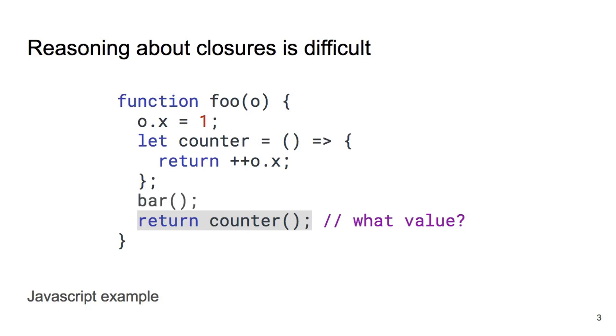But what if we add this innocent looking call to bar to our function? This simple addition is enough to cause trouble. To see why, consider a bar function defined like so. In this example, bar somehow obtained access to the same object that was passed to foo and changed its field x. With this change foo would now return 43 instead.